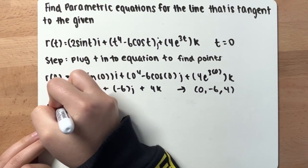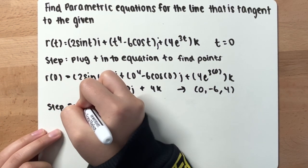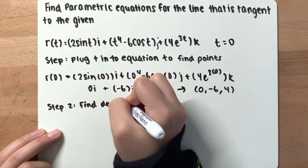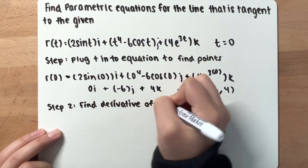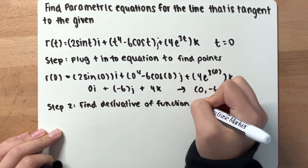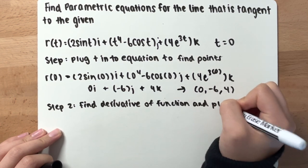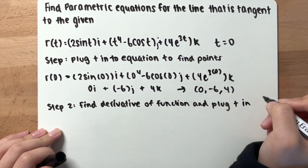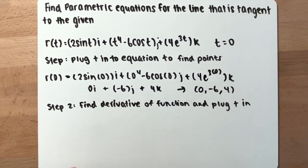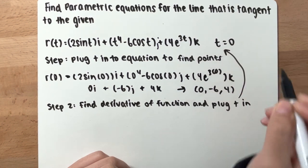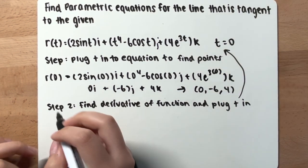Now step 2, find derivative of function and plug t in. t as in this, so we're going to plug 0 in.